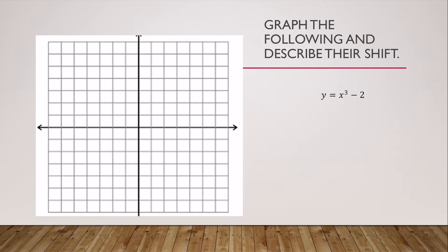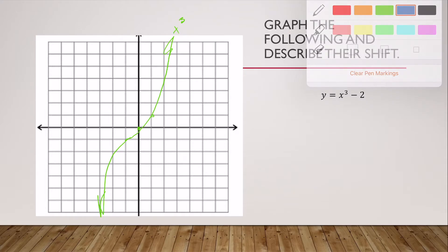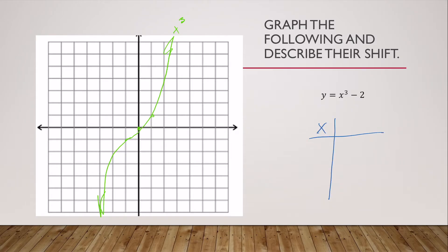Why don't we go ahead and graph the following and describe the shift. Here I have x cubed minus two. I know that x cubed's general shape is like one of these, right? That's what x cubed looks like. If I was going to shift this down two, we should probably find some values, but I could just shift it down two.